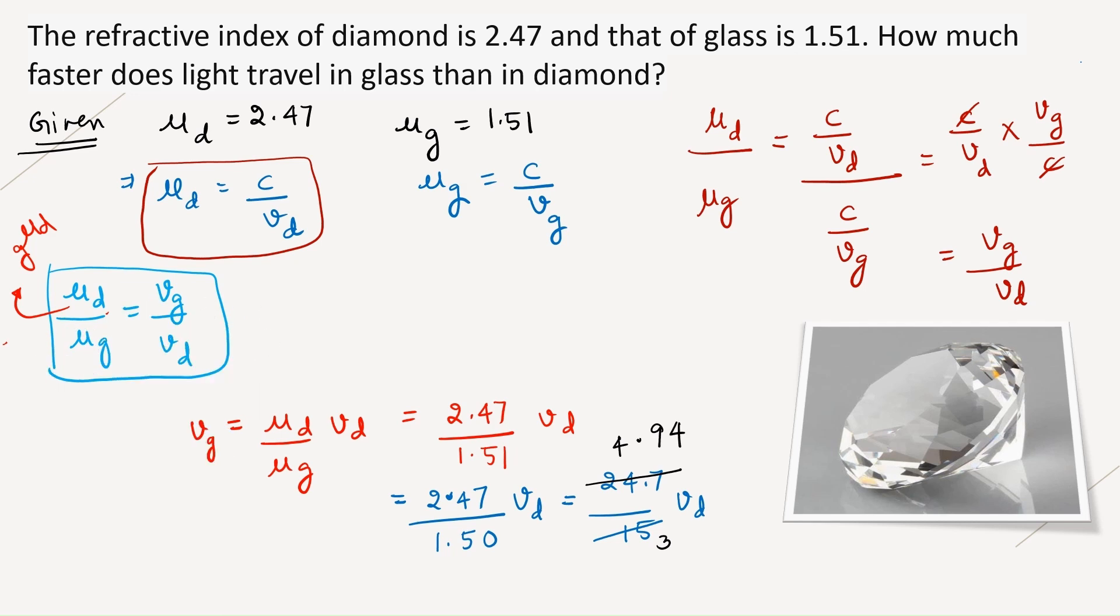Now I can cancel it with 3. 3 ones are 3, 3 sixes are 18, 3 fours are 12. So 3 sixes are 18, and 6, 6, 6 and so on. I will just write 2 digits after decimal. I will round it off to 1.65 Vd.